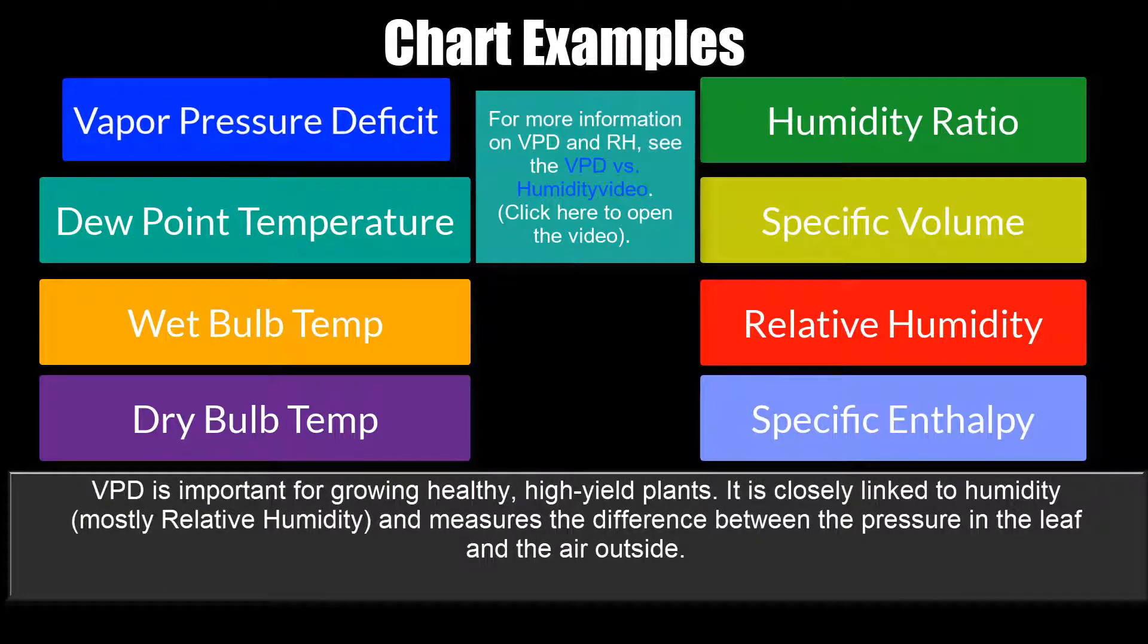VPD is important for growing healthy, high yield plants. It's closely linked to humidity, mostly relative humidity, and measures the difference between the pressure inside the leaf and the air outside.